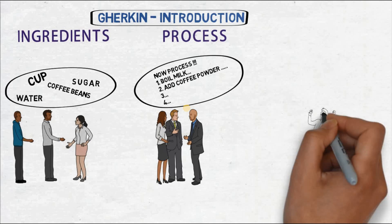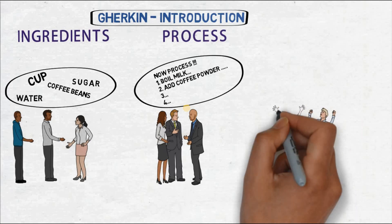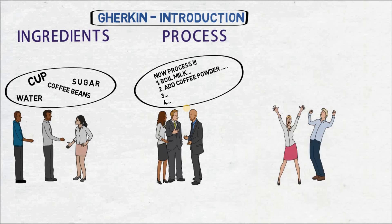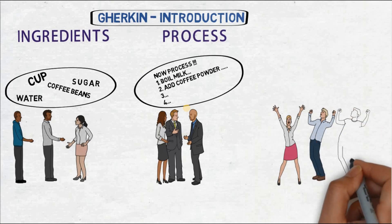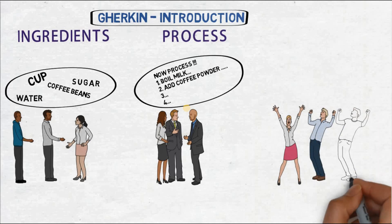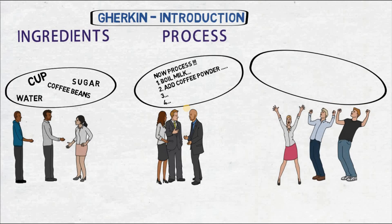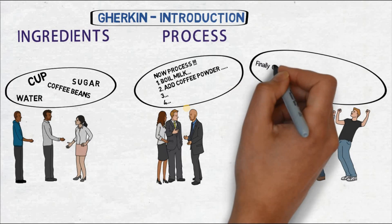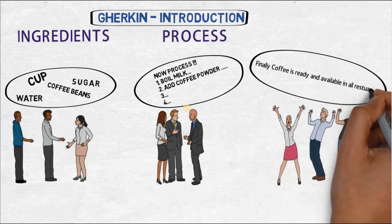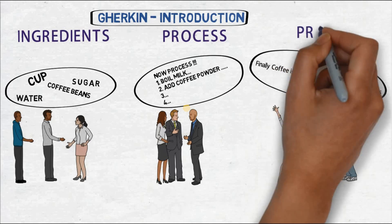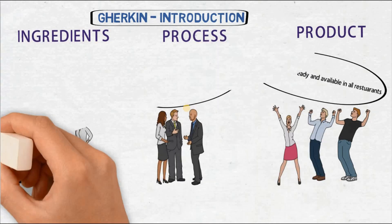Once the process is done, we have the end product: the coffee is ready. The manager can now introduce a new beverage — hot coffee — in all sections of his restaurants across the states. The business owner of XYZ Store is happy and his end goal has been served. We had the ingredients, we had the process, and now the end product is ready. This entire thing has been described in plain English — no coding language has been used.